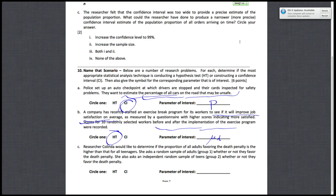And then finally, C. Researcher Kalinda would like to determine if the proportion of all adults favoring the death penalty is higher than that for all teenagers. She asked a random sample of adults whether or not they favor the death penalty. She also asked an independent random sample of teens whether or not they favor the death penalty. So, since you're determining if the proportion of all adults favoring the death penalty is higher than that for teenagers, so you're testing a statement. It's a hypothesis test.